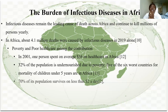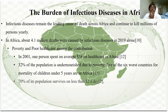How much damage have these diseases done to Africa? Infectious disease is one of the leading causes of death in Africa, killing millions of people every year. In Africa alone, 4.1 million deaths were recorded from infectious disease in 2019. Contributing factors include poverty and poor healthcare — people often cannot afford drugs or transportation to hospital.